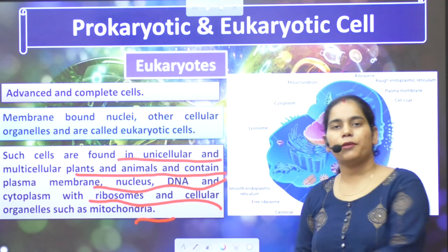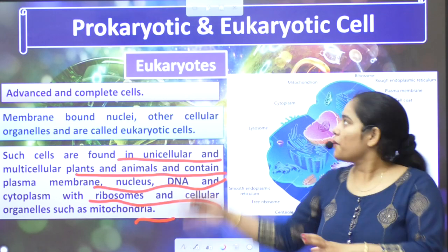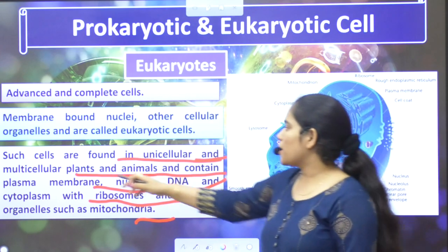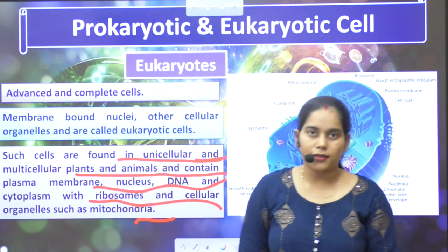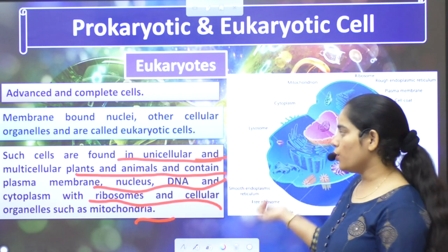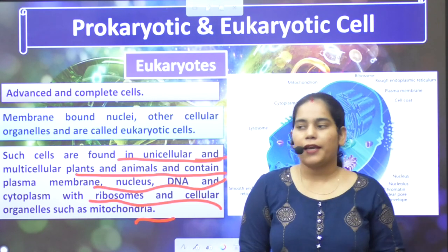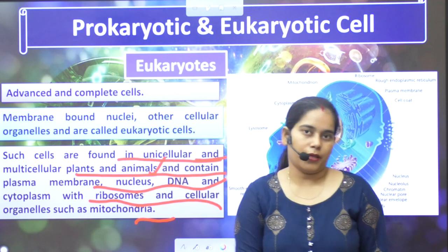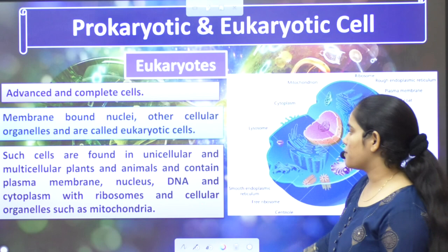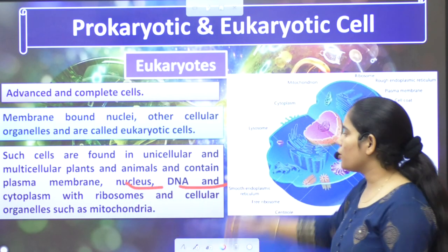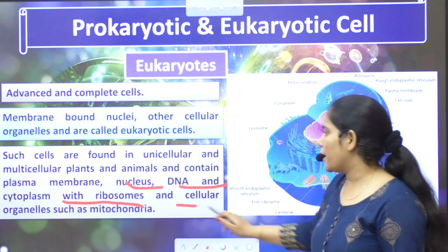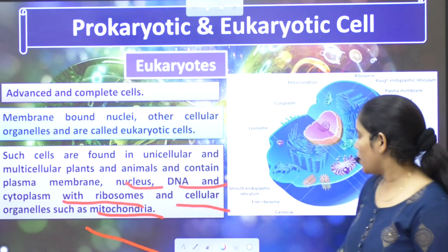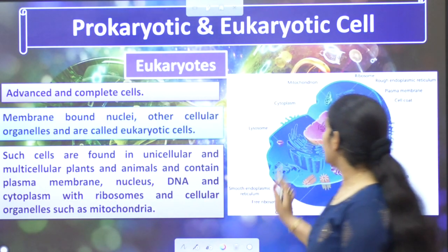Eukaryotes are found in unicellular and multicellular organisms. Bacteria are prokaryote cells, but other unicellular cells are eukaryotes. Multicellular plants — whatever fruit or vegetables you eat — are all plants. Animals include your pets, birds, reptiles, fishes, cow, buffalo, wild animals, and humans — these are multicellular animals. They contain plasma membrane, nucleus, DNA, cytoplasm with ribosomes, and cellular organelles.